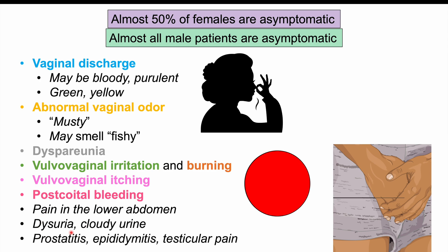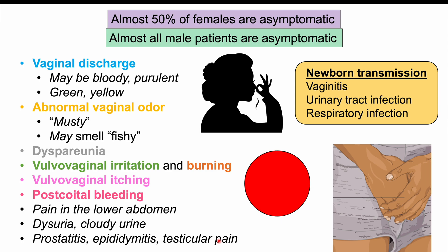In those rare male patients that do experience symptoms, they may have prostatitis (inflammation of the prostate gland), epididymitis (inflammation of the epididymis), and testicular pain. For newborns with trichomoniasis, they can have not only vaginitis (inflammation of the vagina) but also urinary tract infections and respiratory infections, which is important to recognize in that population.